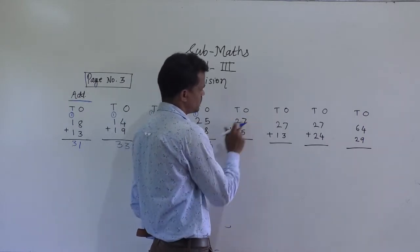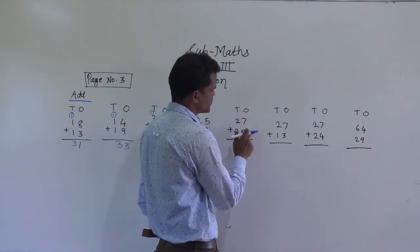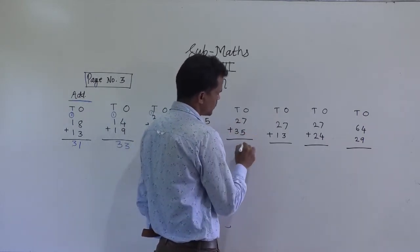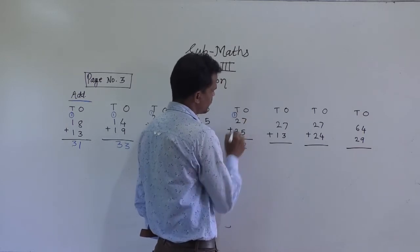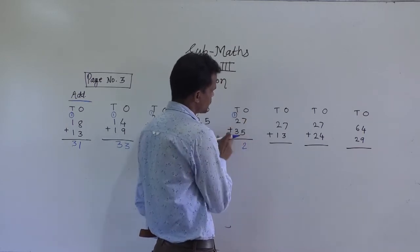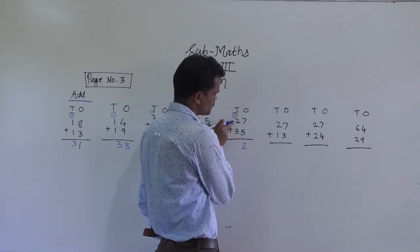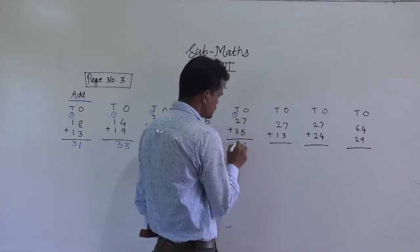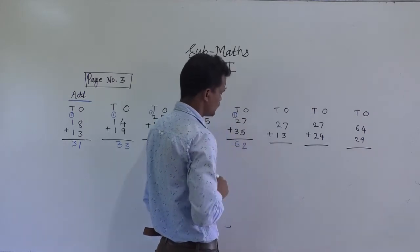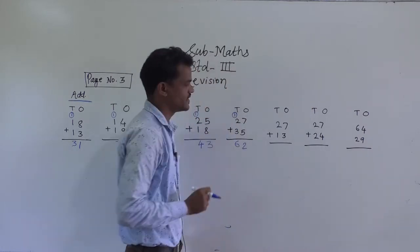Next example: 27 plus 35. 7 plus 5 is 12, so write 2 here and carry 1 forward. 3 plus 2 is 5, plus 1 carry is 6. So 62 is the answer.